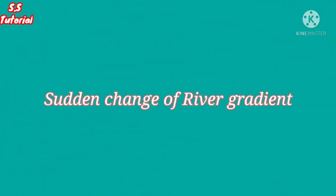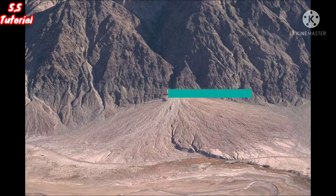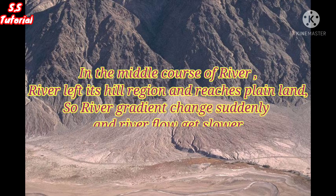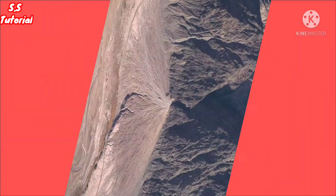First, sudden change of river gradient. In the beginning of the middle course, the river leaves its mountain region and reaches into the plain region. Therefore, the gradient of the river falls suddenly. Due to the much lower slope of the plain, the river flow gets slower.